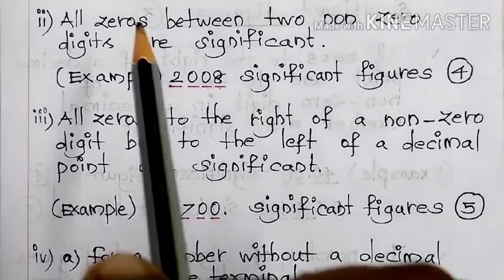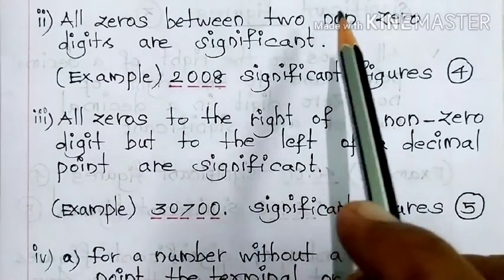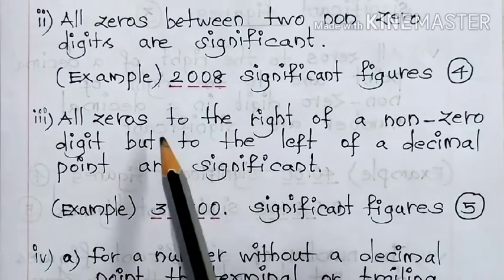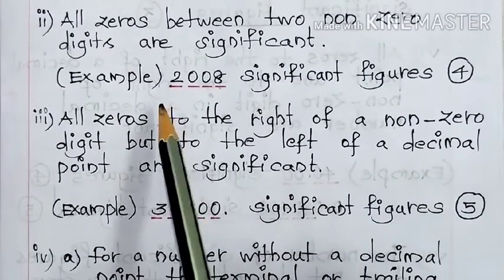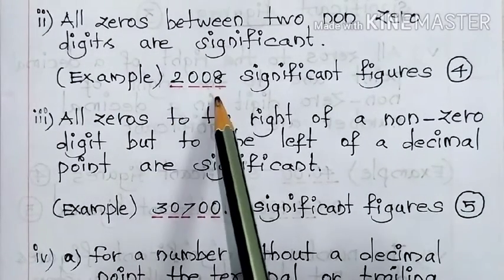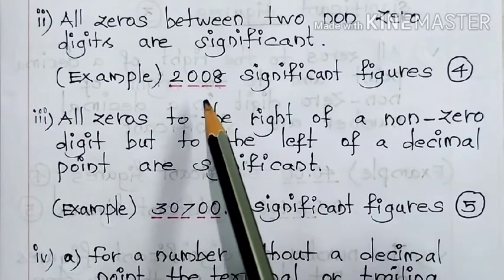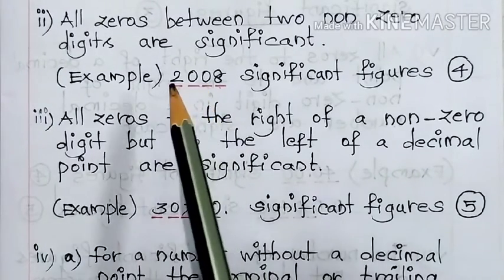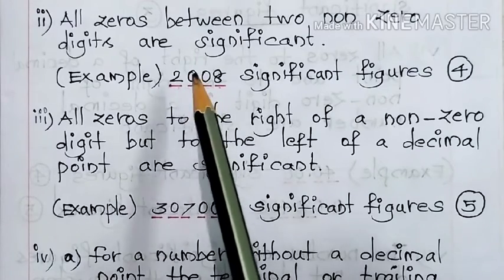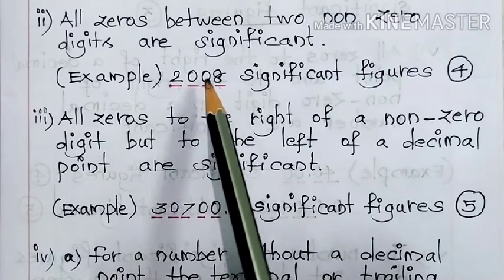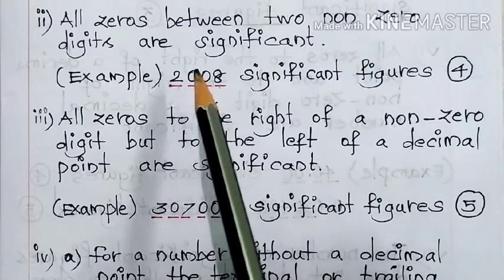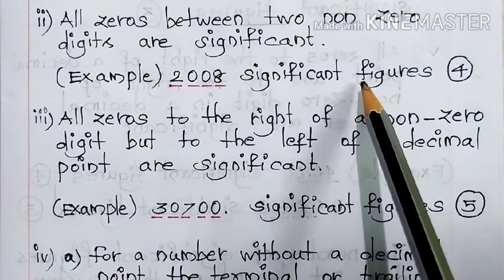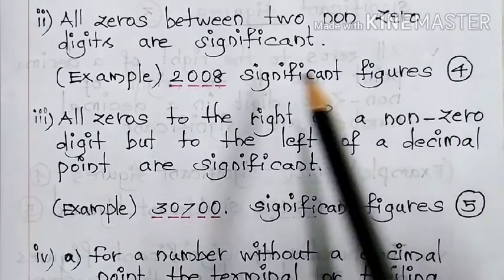All zeros between two non-zero digits are significant. Example: 2008. In this number, two and eight are the non-zero digits. In between these two digits we have two zeros, so they have importance and are also taken as significant figures. The number of significant figures here is four: one, two, three, four.